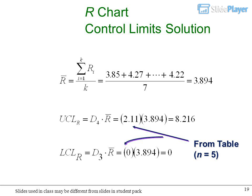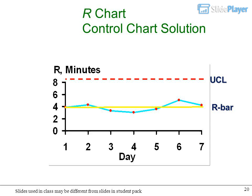R-chart control limit solution: From table, n equals 5. R-chart control chart solution shows UCL and R-bar calculations.